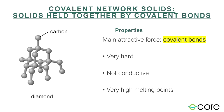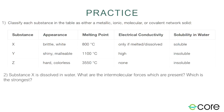Let's look at some practice questions. Classify each substance as metallic, ionic, molecular, or a covalent network solid. Substance X is brittle and white, has a melting point of 800°C, is conductive when melted, and is soluble in water — all properties of ionic solids, so this is an ionic solid. Compound Y is shiny, malleable, has a melting point of 1100°C, and has high electrical conductivity — that's a metallic solid. Compound Z is hard and colorless, has a melting point of 3500°C, and has no electrical conductivity — that is a covalent solid.